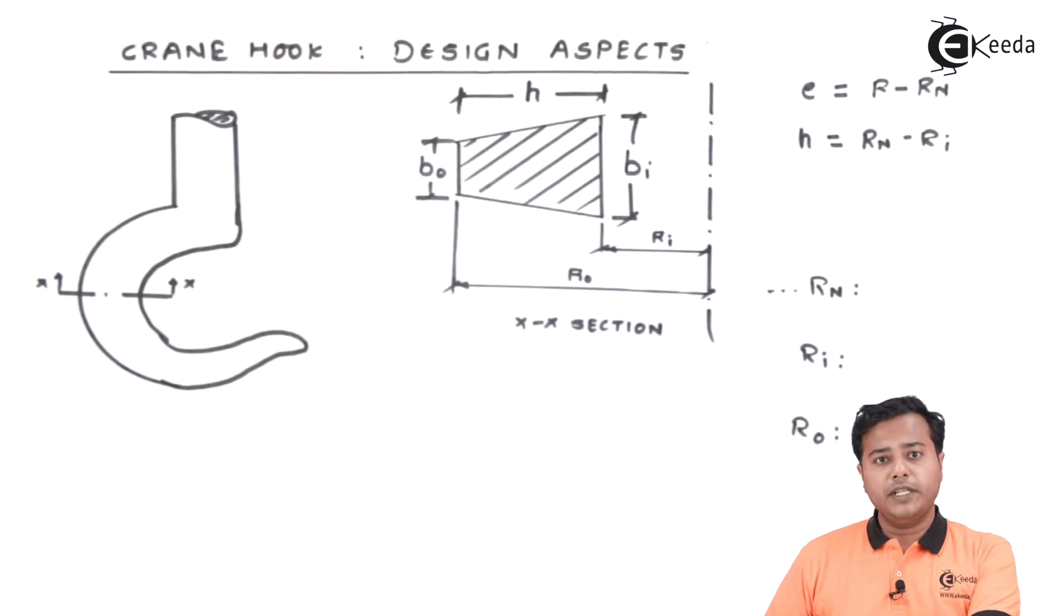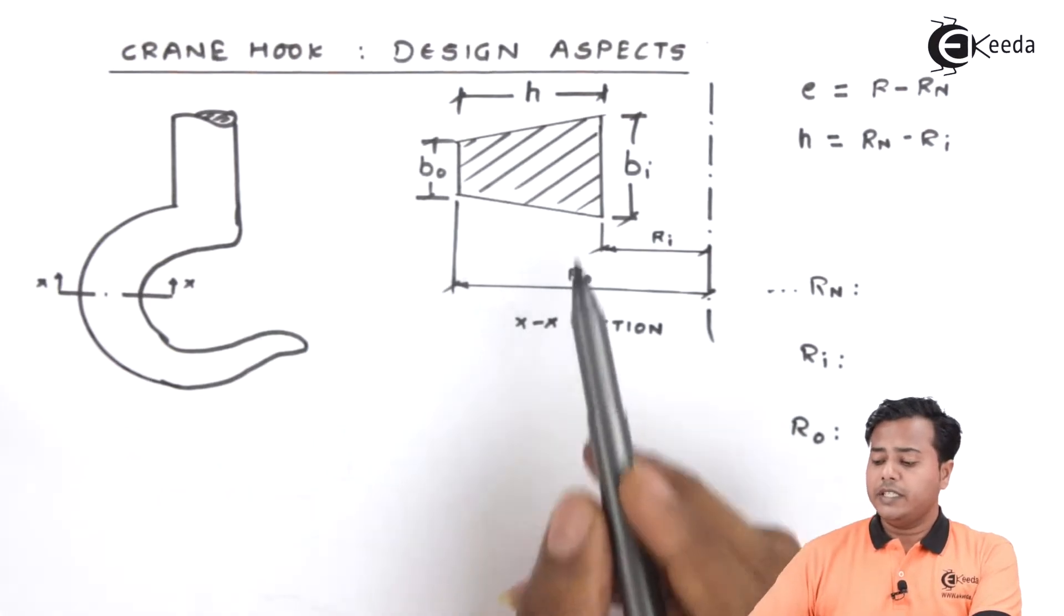Now the cross sections can be I, it can be T, it can be a trapezoid, it can be a circle also, it can be a rectangle also. For different cross sections you can find out different formulae which are associated with these cross sections in the PHG data book.